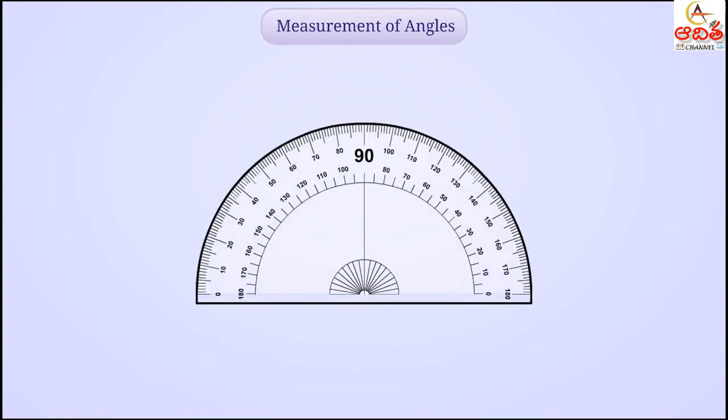You must have seen this object in your geometry box. Can you tell what it is and what its use is? Think a little. Let me tell you. We call this a protractor. We use it to measure angles.